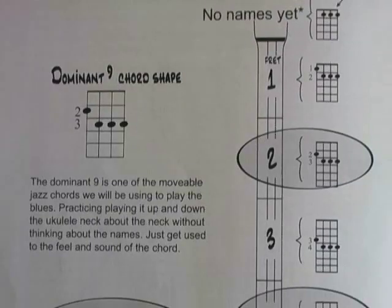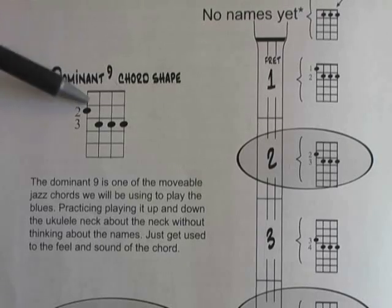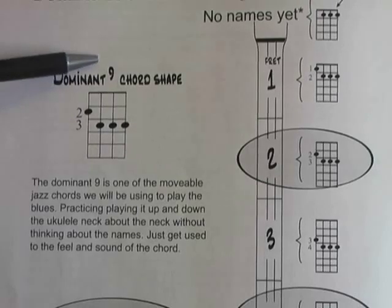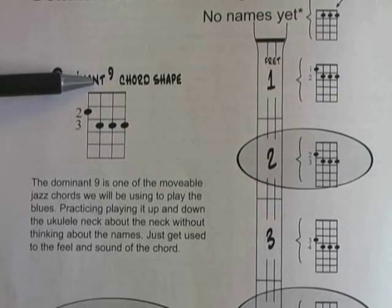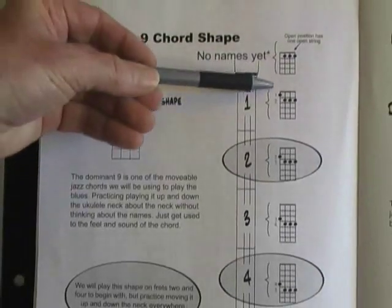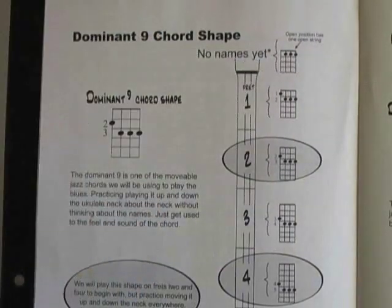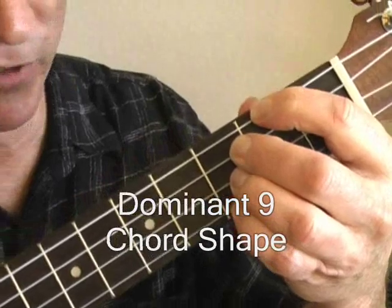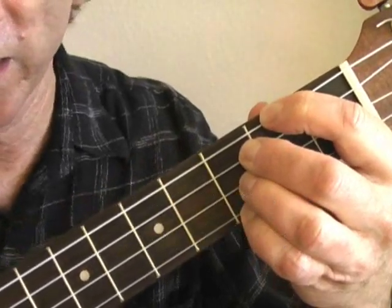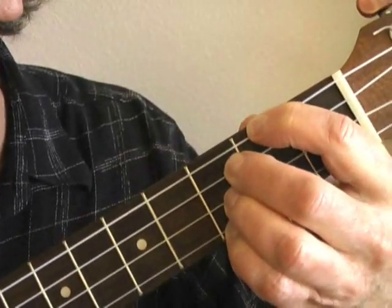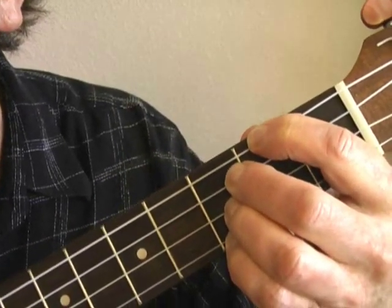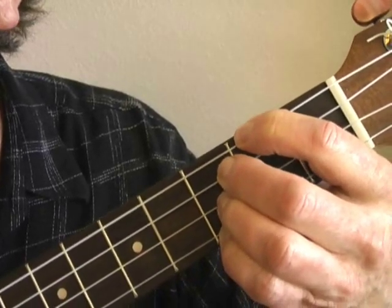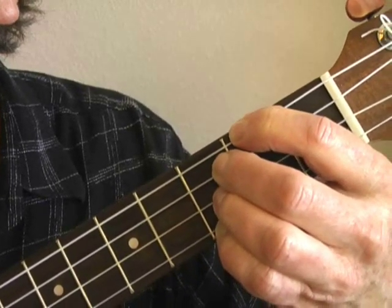Now as I mentioned before, we only need two chord shapes to begin playing jazz blues chord progressions. Here's the second of those shapes. It's a dominant nine chord, or simply called a nine chord, and we're going to see how this chord moves up and down the neck as well. Here's what the nine chord shape looks like, and here's what it sounds like. That's the sound of a dominant nine chord, or a nine chord.